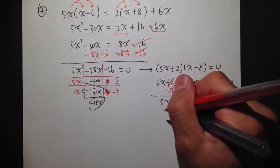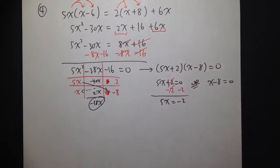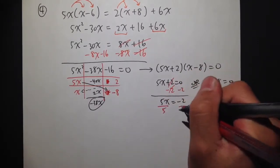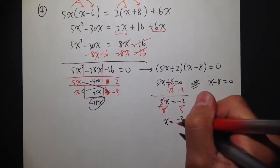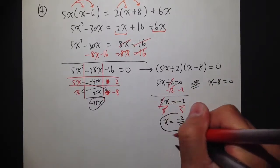And then we get 5x equals to negative 2. And then divide both sides by 5 like this. I get x is equal to negative 2 over 5. First answer.